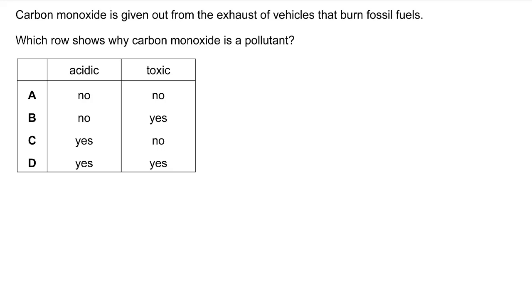The last question: carbon monoxide is given out from the exhaust of vehicles that burn fossil fuels. Which row shows why carbon monoxide is a pollutant? It is toxic — so could be B or D. But is carbon monoxide an acidic oxide? No — unlike carbon dioxide which is acidic, carbon monoxide is neutral. So the correct option is B. Most candidates chose D, thinking carbon monoxide is similar to carbon dioxide and therefore acidic.